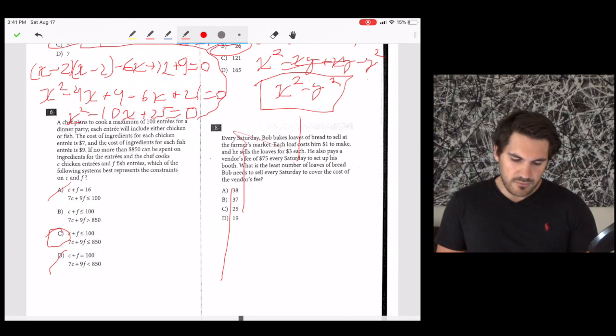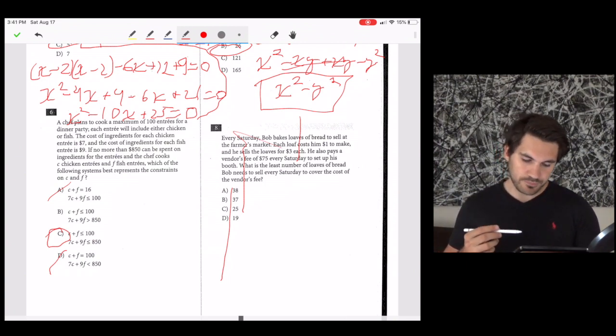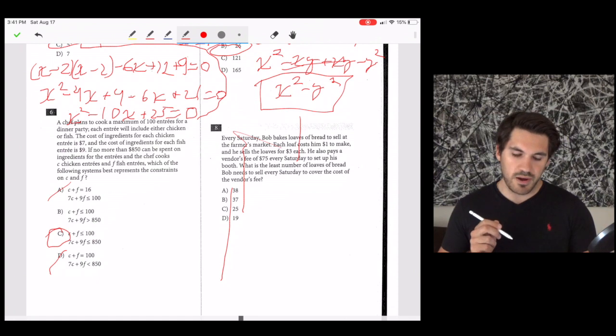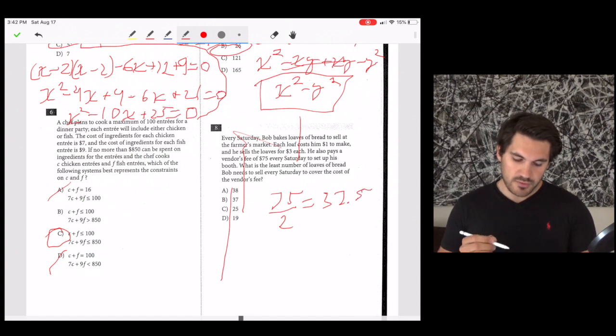Every Saturday, Bob makes loaves of bread to sell at the farmer's market. Each loaf costs a buck to make. He sells each one for three bucks. He pays a vendor's fee of 75 bucks every Saturday to set up his booth. What is the least number of loaves of bread he needs to sell to cover the cost of the vendor's fee? We need to cover the $75. If each loaf costs a buck to make, and he sells them at three bucks each, that means he makes a profit of $2 for every loaf. So, we can just divide 75 by 2. This is going to get us 37.5, which means that he needs to sell 38 to cover his cost.